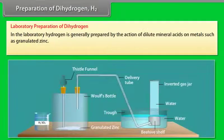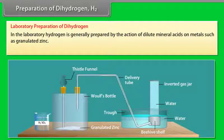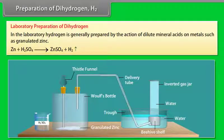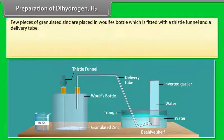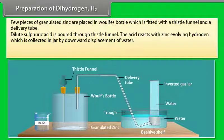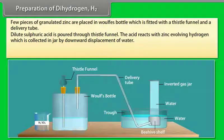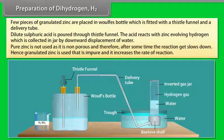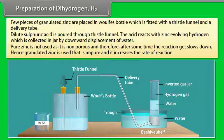In the laboratory, hydrogen is generally prepared by the action of dilute mineral acids on metals such as granulated zinc. Few pieces of granulated zinc are placed in a bottle which is fitted with a thistle funnel and a delivery tube. Dilute sulphuric acid is poured through thistle funnel. The acid reacts with zinc, evolving hydrogen, which is collected in jar by downward displacement of water. Pure zinc is not used as it is non-porous and therefore, after some time, the reaction slows down. Hence, granulated zinc is used that is impure and it increases the rate of reaction.